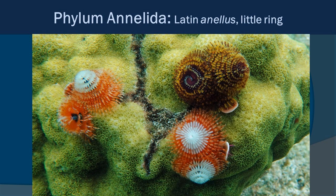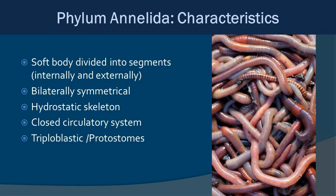The next phylum is phylum Annelida. The Latin 'annulus' means little ring. The major characteristic is a soft body divided into segments — unlike molluscs, which had an unsegmented soft body. These segments are both internal and external. Annelids are bilaterally symmetrical, have a hydrostatic skeleton using water pressure to hold their form, a closed circulatory system, and are triploblastic with all three germ layers. They are also protostomes, so their first blastopore opening becomes a mouth.